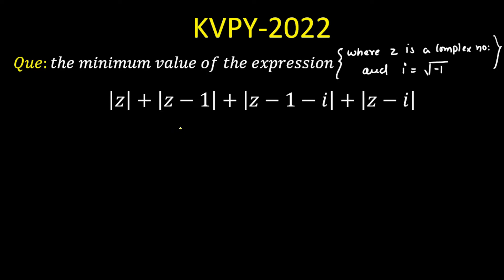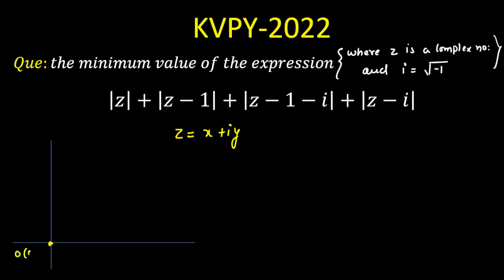You can see this in the Argand plane. If z is a moving point, let's say z equals x plus iota y, it's moving such that its distance from all these four points is minimized. If you plot these four points: the first point is (0,0), let's call it O; the second point is on the x-axis, that is (1,0), let's say point A; next is (1,1), let's say point B; and the last point from z minus iota is (0,1), let's say point C.